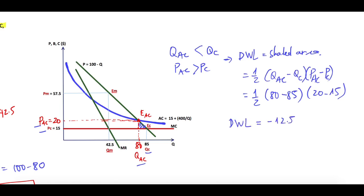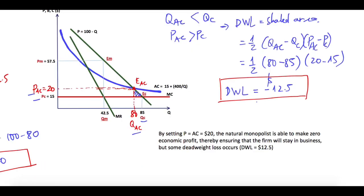So this is the deadweight loss. We can conclude that by setting price equal to average cost, equal to $20, the natural monopolist will be able to make zero economic profit, or a fair return on investment, thereby ensuring that the firm will stay in business. However, some deadweight loss still occurs and equals $12.5.